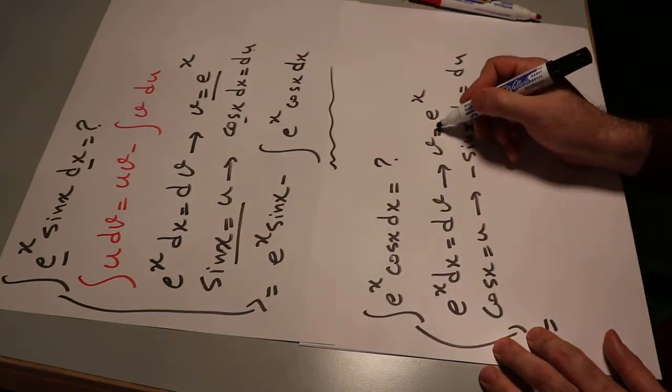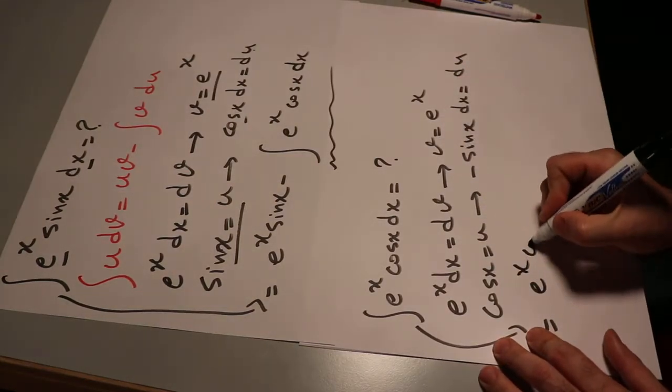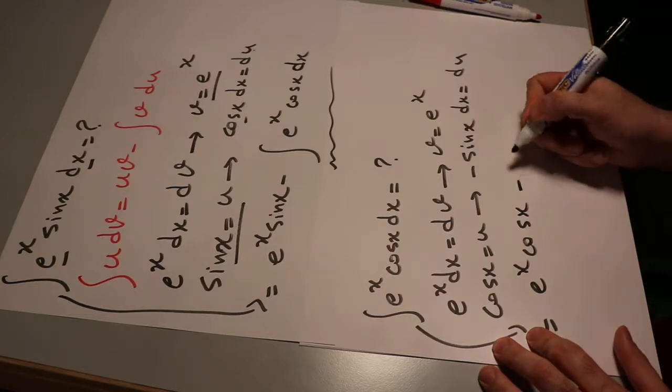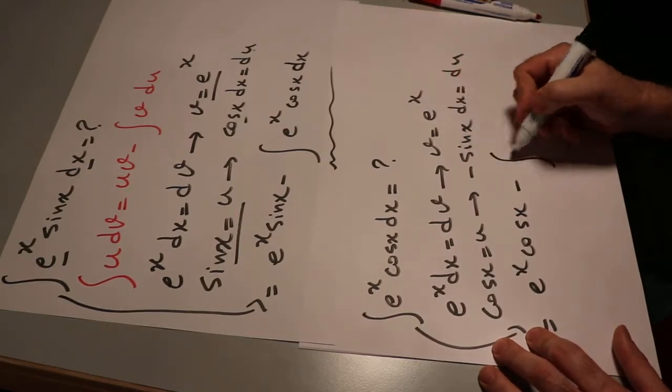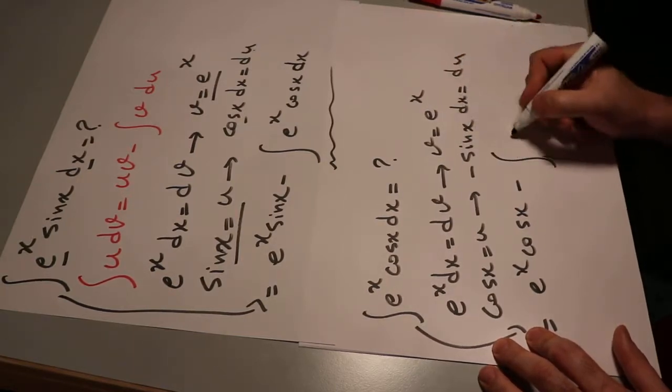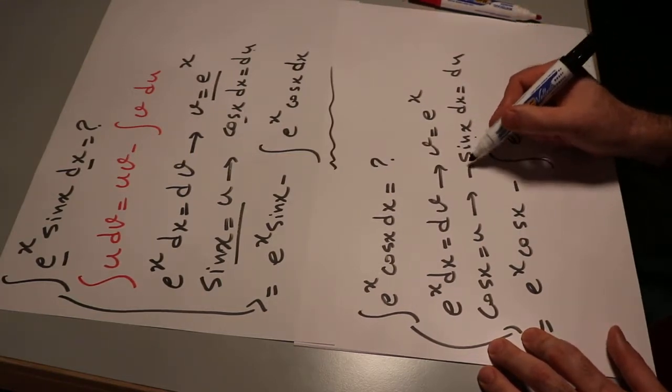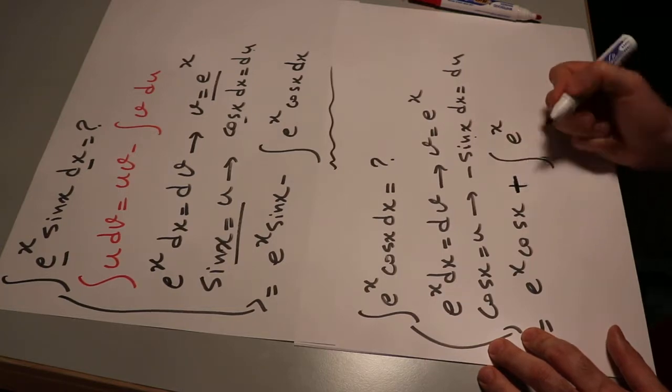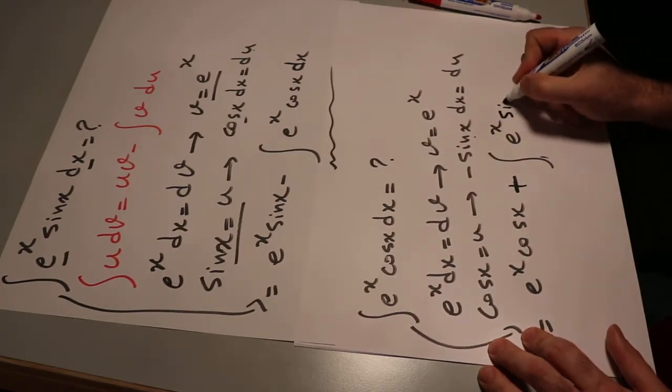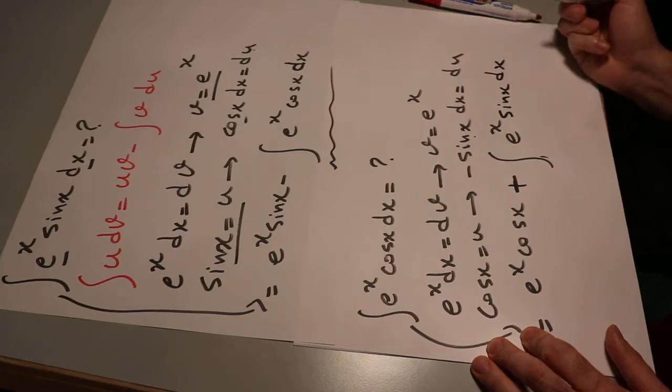That means this integral, you can write it u times v, that will be e^x times cos x minus the integral of v, which is e^x, times du, which is minus sin x dx. So minus times minus will be plus, will be positive, times sin x dx.